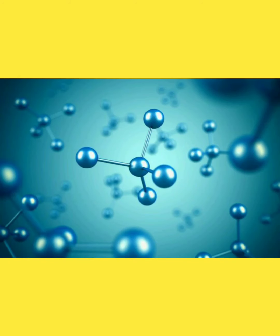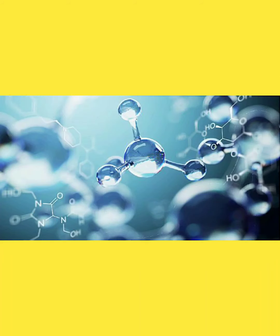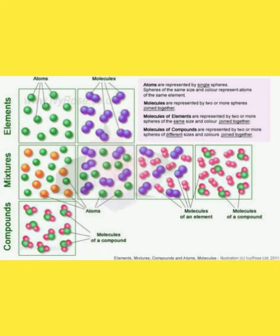Suppose these balls represent atoms — in an element, the atoms are of one type. In a compound, the atoms are of different types but are chemically bonded. Elements can have atoms or molecules. Mixtures are just a combination without bonding. Compounds are actually bonded atoms or molecules. The definitions are written here — you can pause the video and learn them.